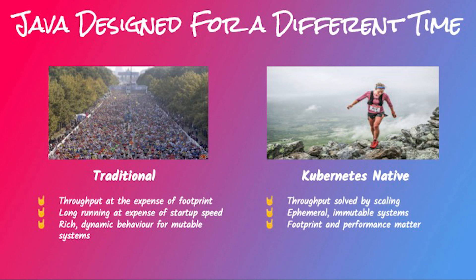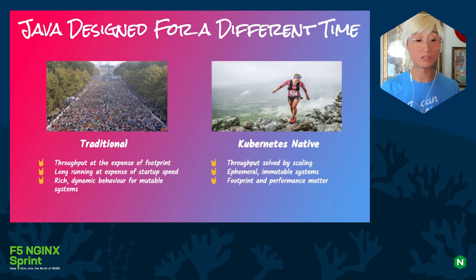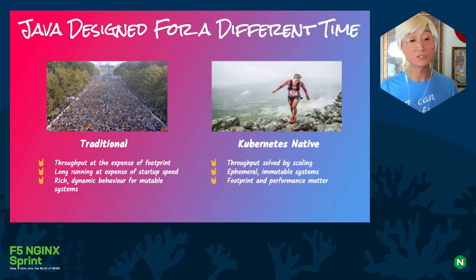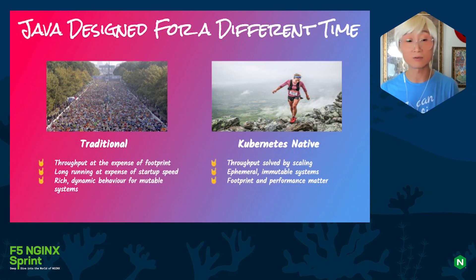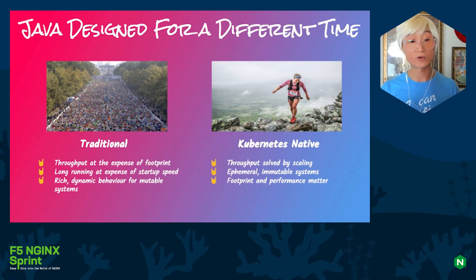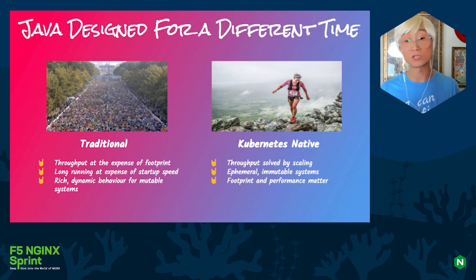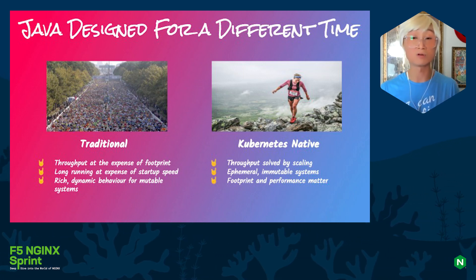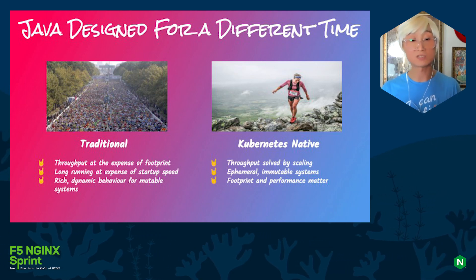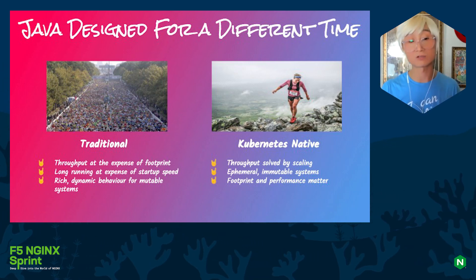Before we get started, let's think about what Kubernetes-native Java applications mean in this era. Java was designed back in 1995, almost 27 years ago, to handle high-throughput network traffic. At the time, Java was really awesome — when you created and packaged a Java application as bytecode, you could run it on any virtual machine. Nobody cared about how much money or time it took to run Java; what mattered was keeping your application stable 24/7. That was the only thing enterprise companies cared about decades ago.